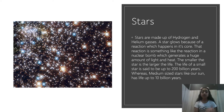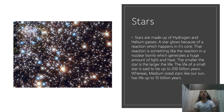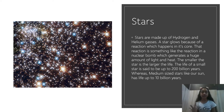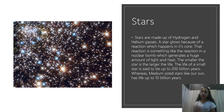The smaller the star is, the larger the life of the star. The life of a small star is said to be up to 200 billion years. Whereas a medium sized star like our sun has a life of up to 10 billion years.